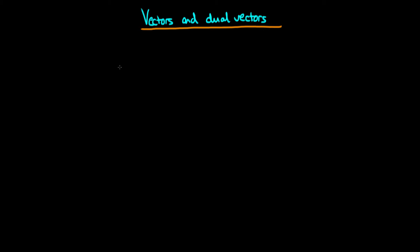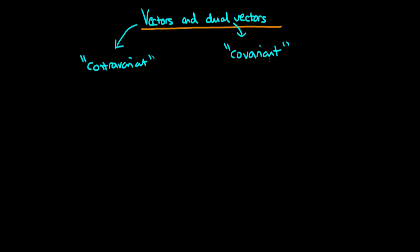In this video, I want to introduce the concepts of vectors and dual vectors. Both of these entities have different names that they're sometimes called in books or literature. Vectors are also known as contravariant vectors, whereas dual vectors are sometimes known as covariant vectors. An alternative name for dual vectors that is often used, partly to emphasise the fact that dual vectors aren't really what we're used to as vectors, is something known as a one-form.